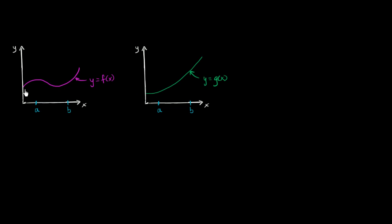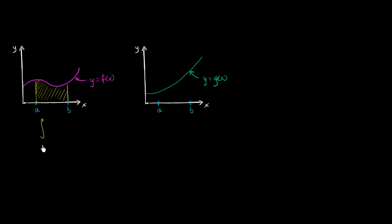We have a couple of functions here. This is the graph of y equals f of x, and this is the graph of y equals g of x. We already know ways to represent the area under the curve y equals f of x between two points, x equals a and x equals b. This area between the curve and the x-axis, between x equals a and x equals b, we can write as the definite integral from a to b of f of x dx.